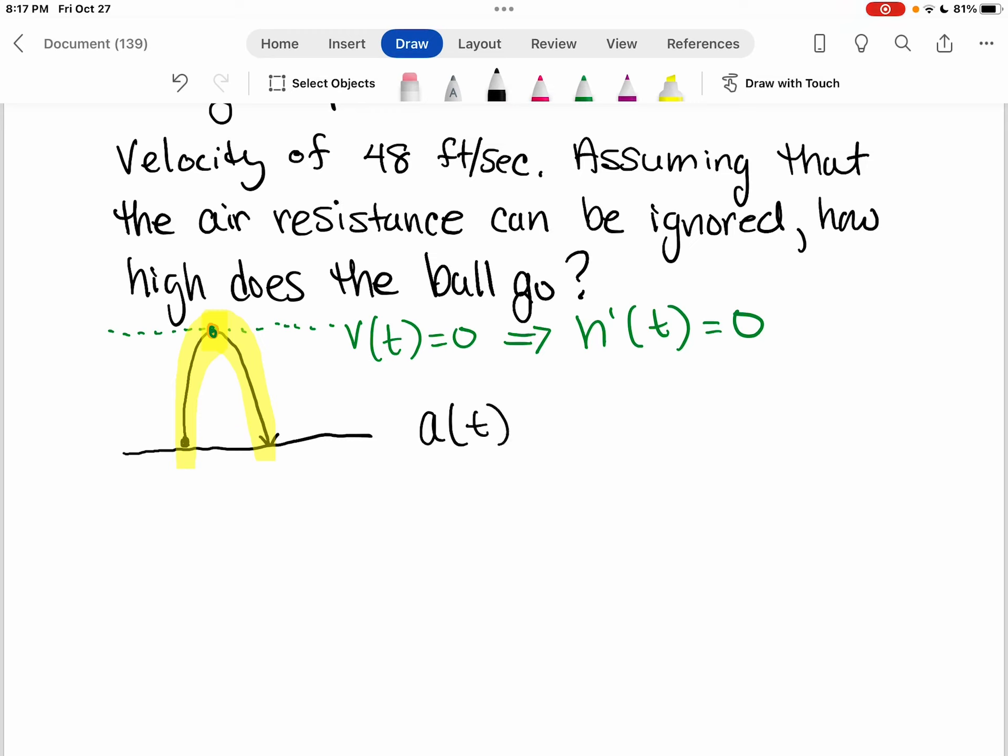So we're going to start with our acceleration. We know that acceleration due to gravity in this situation would be negative 32 feet per second squared. When I use the antiderivative to work backwards to find the velocity, I would get that the velocity is negative 32T plus some constant.